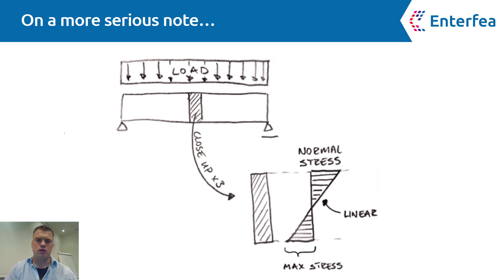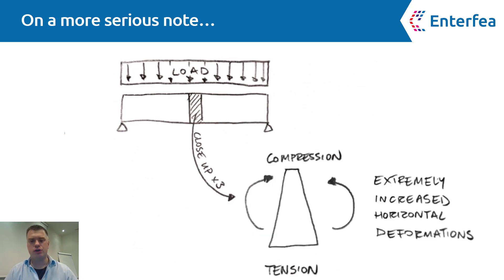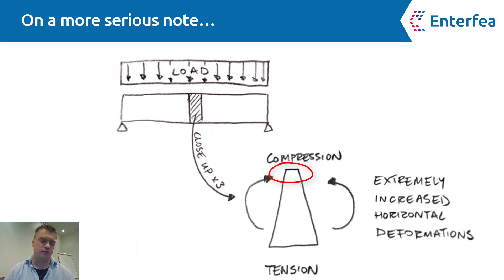On a more serious note, we can show how plasticity works on a simply supported beam. Just imagine that I cut out a rectangle from the middle and make a small close-up. If the case is linear, you can see that the normal stress behaves in a linear way, which is something to be expected. However, it's much more effective to think about this rectangle as something that will deform. If I would extremely increase horizontal deformations, on the top the rectangle got shorter because of compression, and at the bottom it would be in tension.